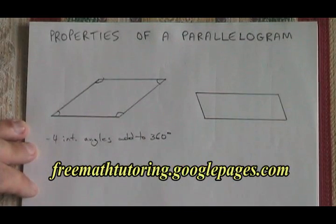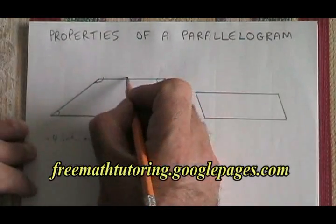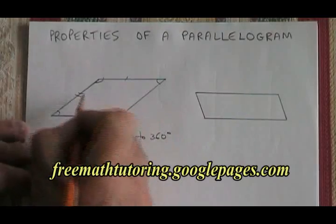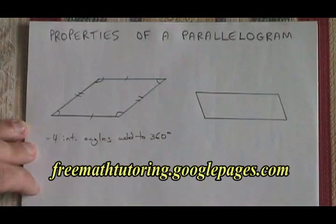A parallelogram has opposite sides that are congruent, and this is signified in this way. Both pairs of opposite sides are congruent.